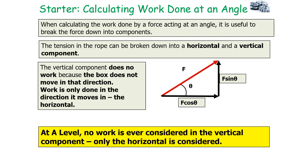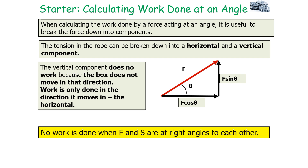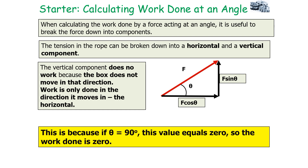At A-level, only the horizontal component is considered for work done. Remember, no work is done when F and s are at right angles to each other. If theta equals 90 degrees, cos 90 equals zero, so the work done would equal zero.